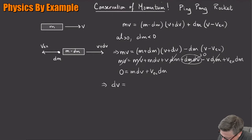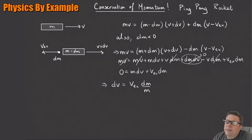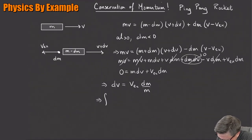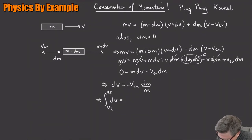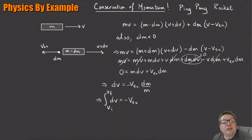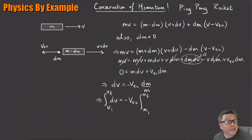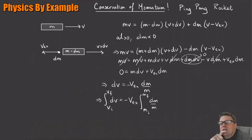After cancellations, what's left is: 0 = m·dv + v_exhaust·dm. Rearranging, I get dv = −v_exhaust · (dm/m). I'd like to integrate both sides — dv on one side, and dm/m on the other. Since m is changing, I integrate dv from v_initial to v_final, and dm/m from the initial mass to the final mass of the rocket.